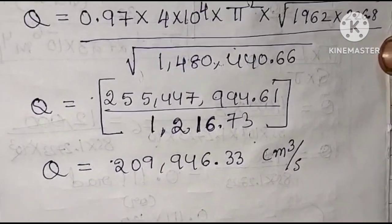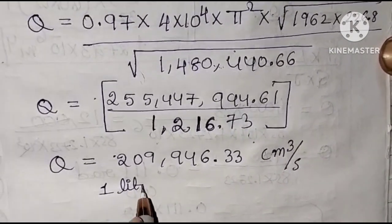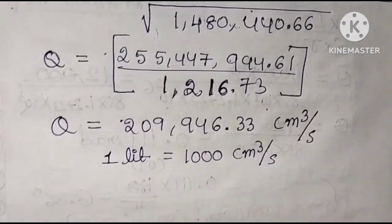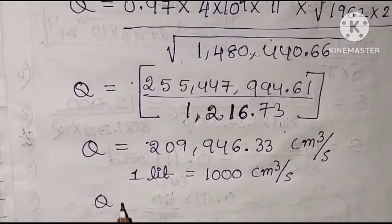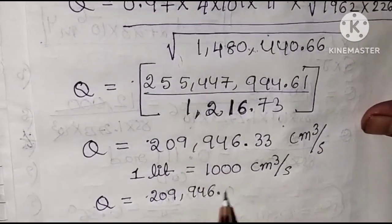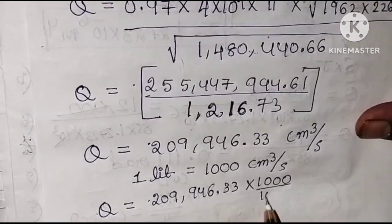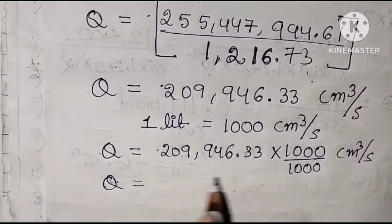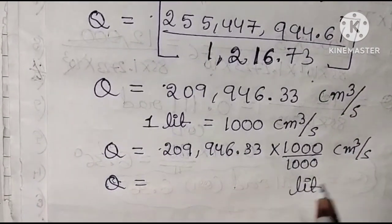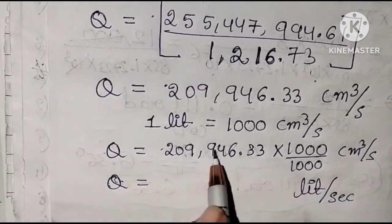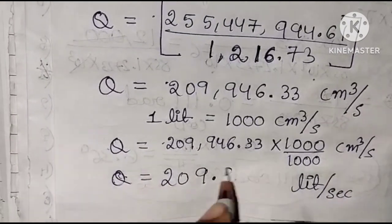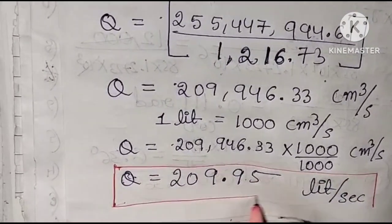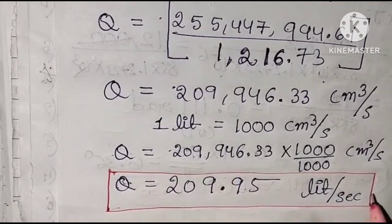Converting to liters per second, since 1 liter = 1000 cm³, Q = 209,946.33 / 1000 ≈ 209.95 liters per second. Therefore, the rate of flow of water in the horizontal venturimeter is 209.95 liters per second. This is the final answer.